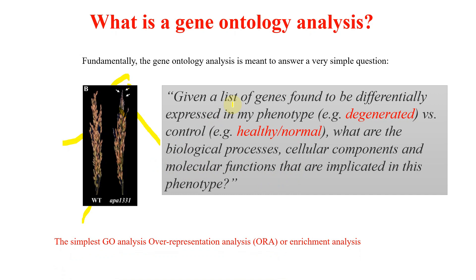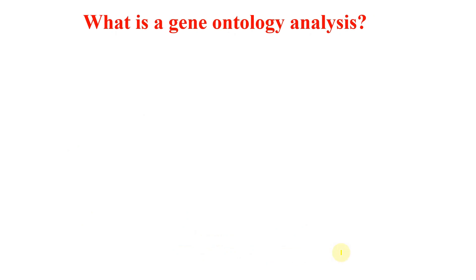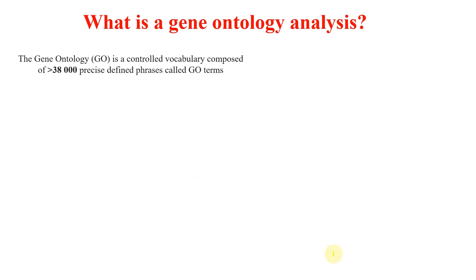The simplest gene ontology analysis is over-representation analysis, which is also known as enrichment analysis. The gene ontology is a controlled vocabulary composed of more than 38,000 precisely defined phrases which are called GO terms.